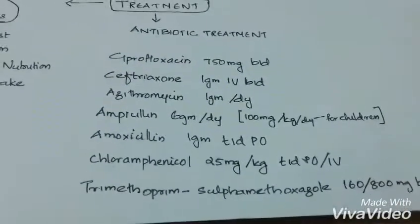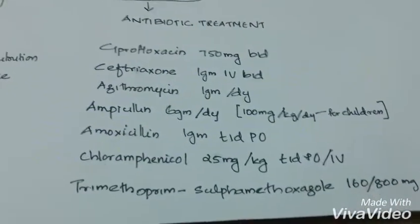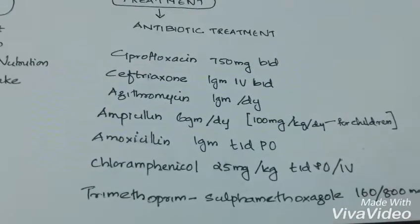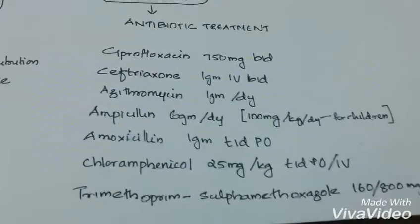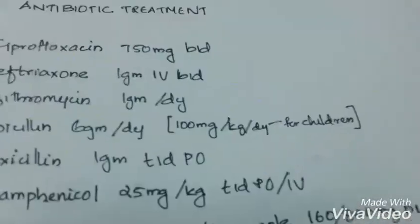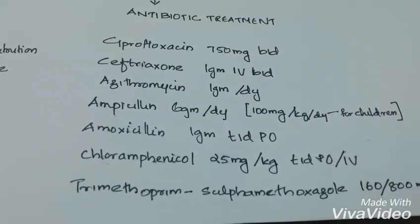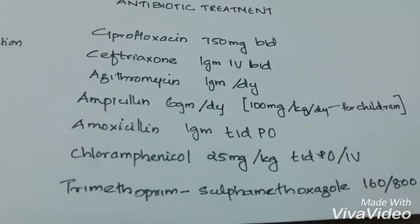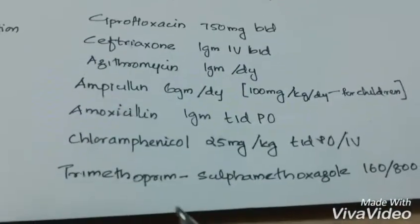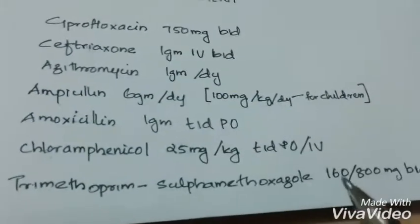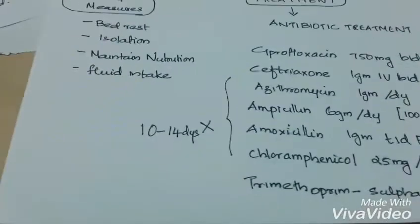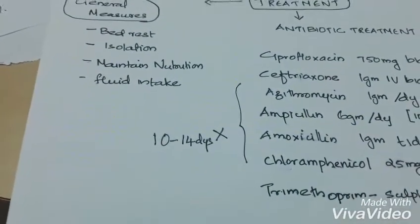Coming to antibiotic treatment, we can follow any one of the regimens. For children, we prefer ciprofloxacin 15 mg per kg per day. For adults, amoxicillin 1 gram TID orally, chloramphenicol 25 mg per kg TID orally or IV, trimethoprim-sulfamethoxazole 160/800 mg BID. Treatment should be taken for about 10 to 14 days.